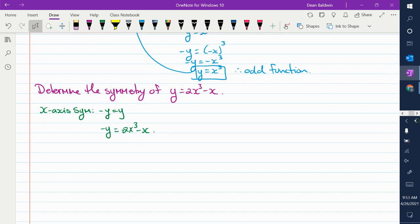So if I put a negative y in here, I get that. Then I got to get rid of the negative in front of the y. So what do I do? Multiply or divide it off. What happens to everything on the other side? Yeah, they're all going to flip signs, right? So you're going to get this. Is that the same as that? No. So does it have symmetry with the x-axis? No. No sim.